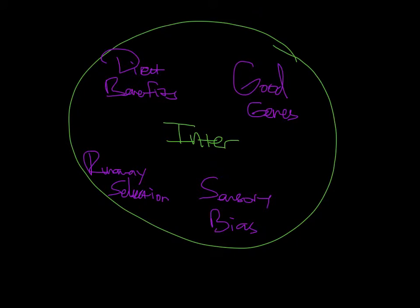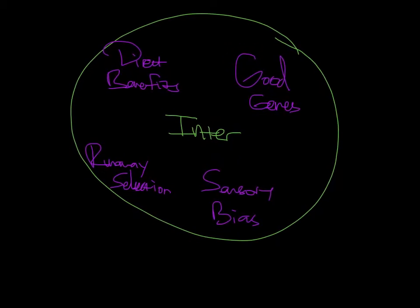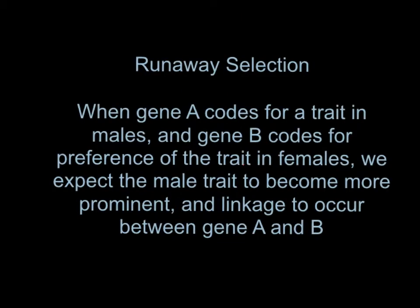Looking at this diagram, there are four ways mating choice can happen: Number one, Good Genes; Number two, Direct Benefits; Number three, Sensory Bias; Number four, Runaway Selection. As discussed on a previous slide, we will talk further in depth on one of the mating choices called Runaway Selection.